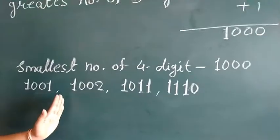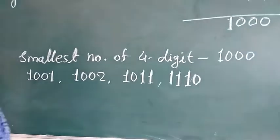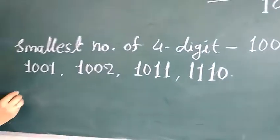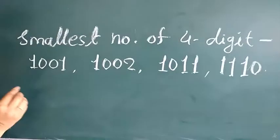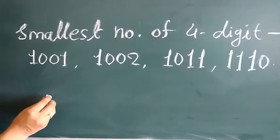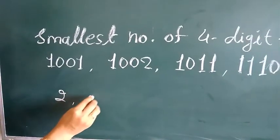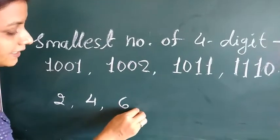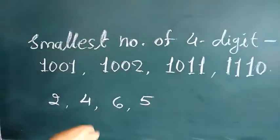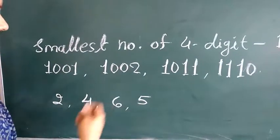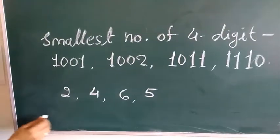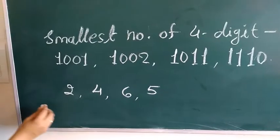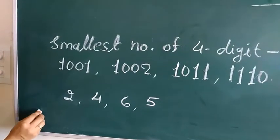As we continue counting, we find more 4-digit numbers. So, let's take any 4 digits — like 2, 4, 6, and 5 — and use these digits to make a 4-digit number.